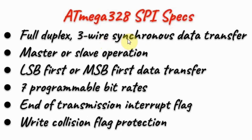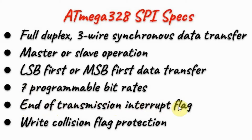Full duplex with three-wire synchronous communication. We can program the SPI in either master mode or slave mode. We can either transmit the least significant bit first or the most significant bit. It has seven programmable bit rates for generating the serial clock. There are two important flags: the end of transmission interrupt flag to indicate the end of transmission, and the write collision flag, which is used to avoid writing to the shift register before data is shifted out.